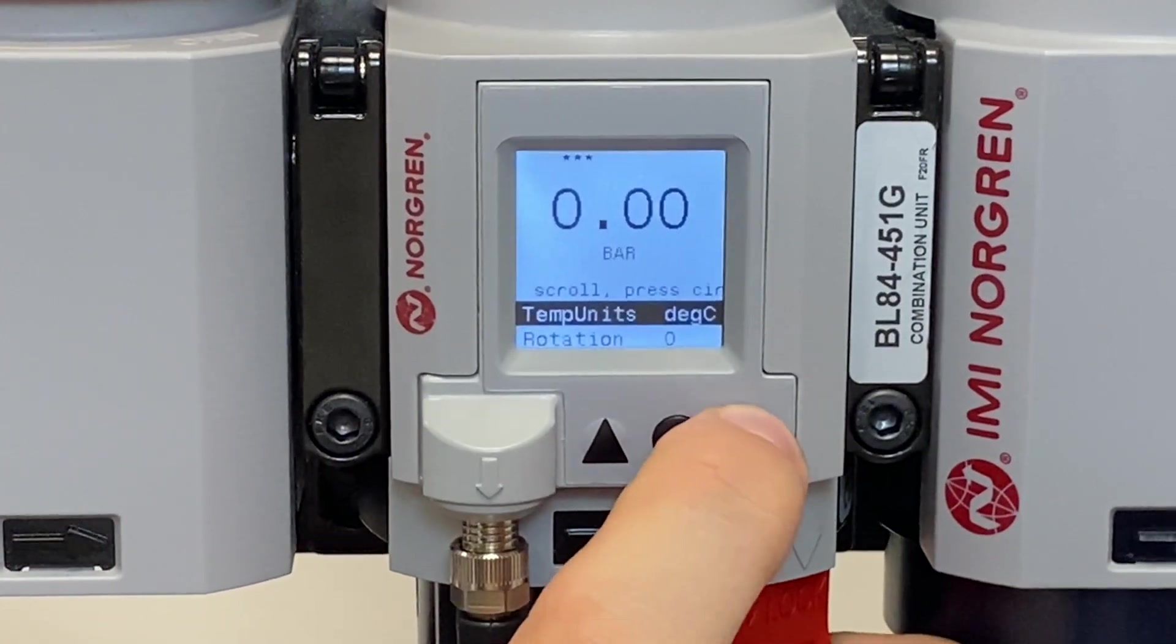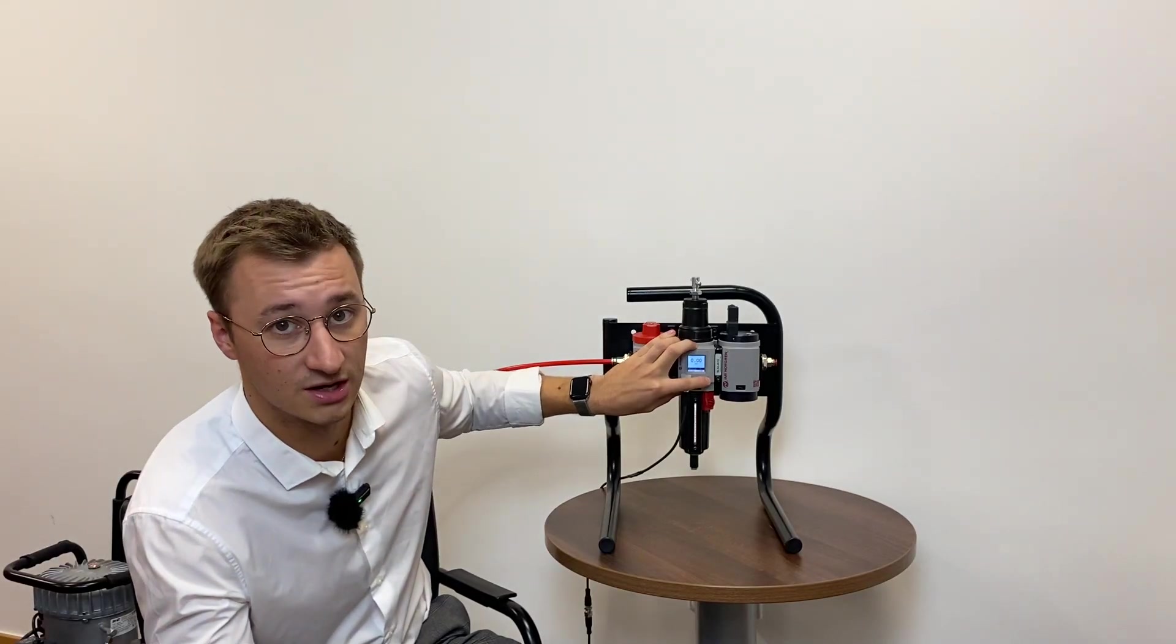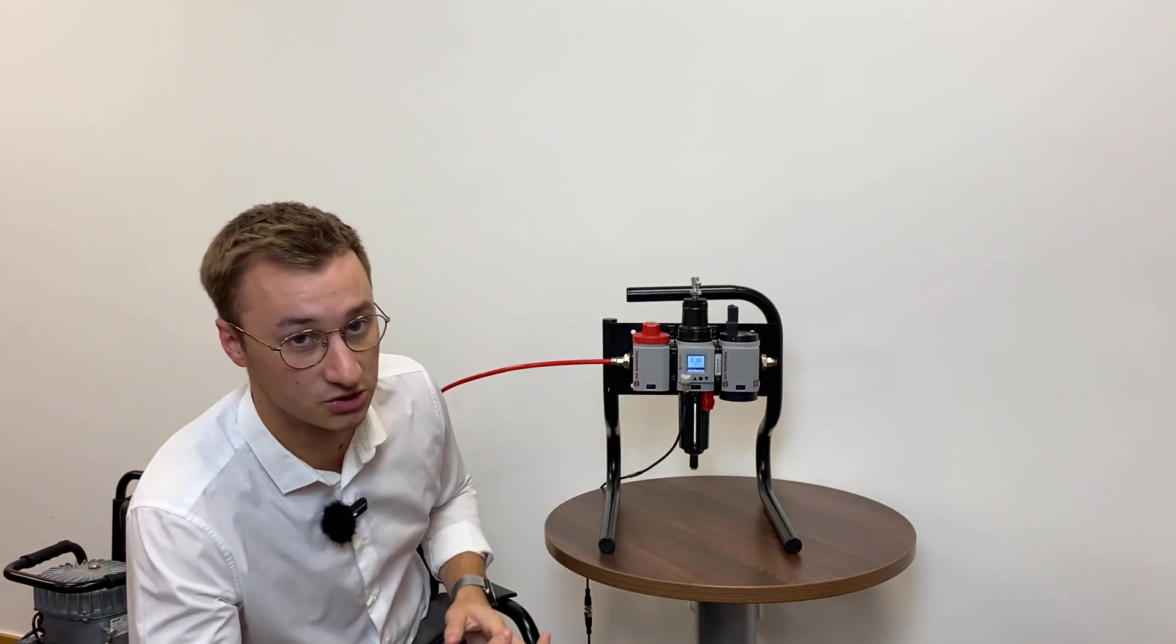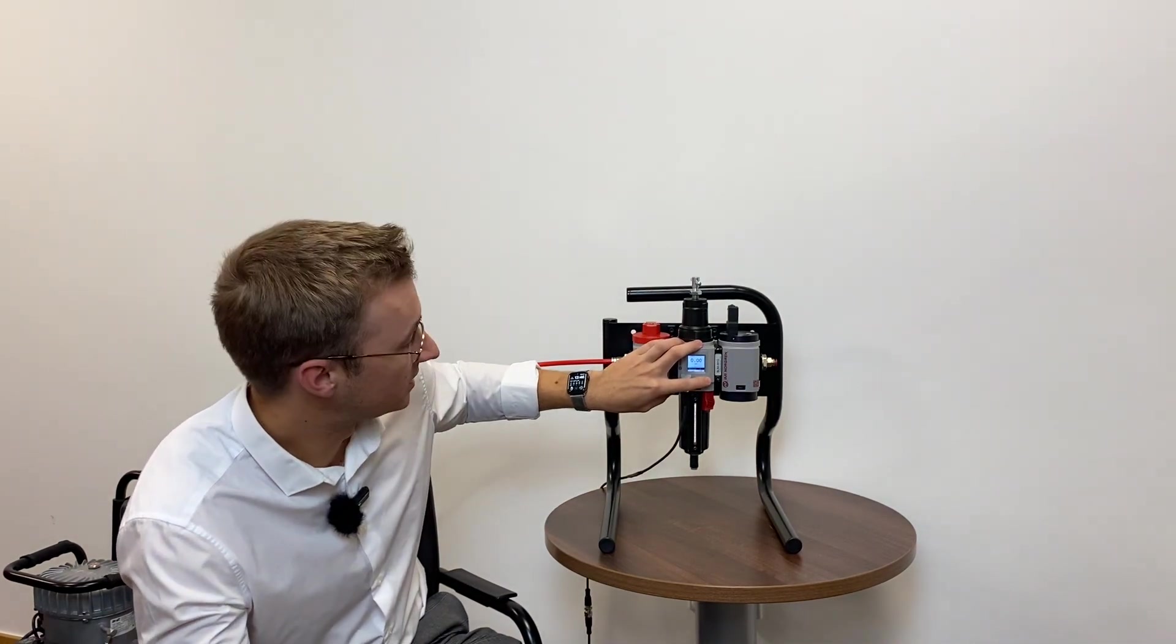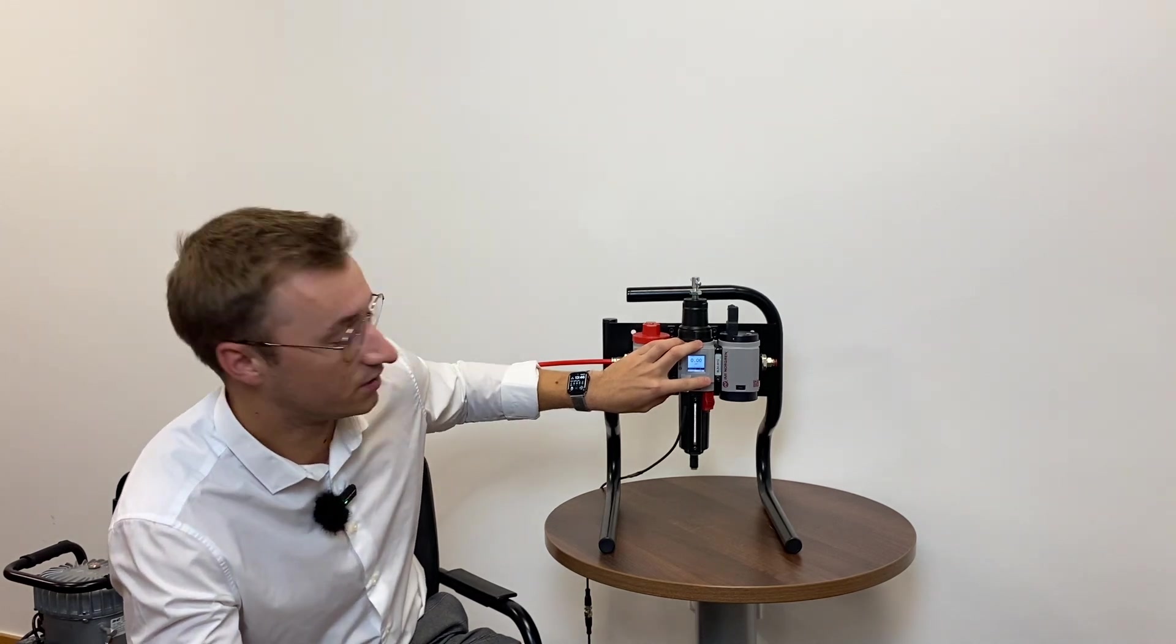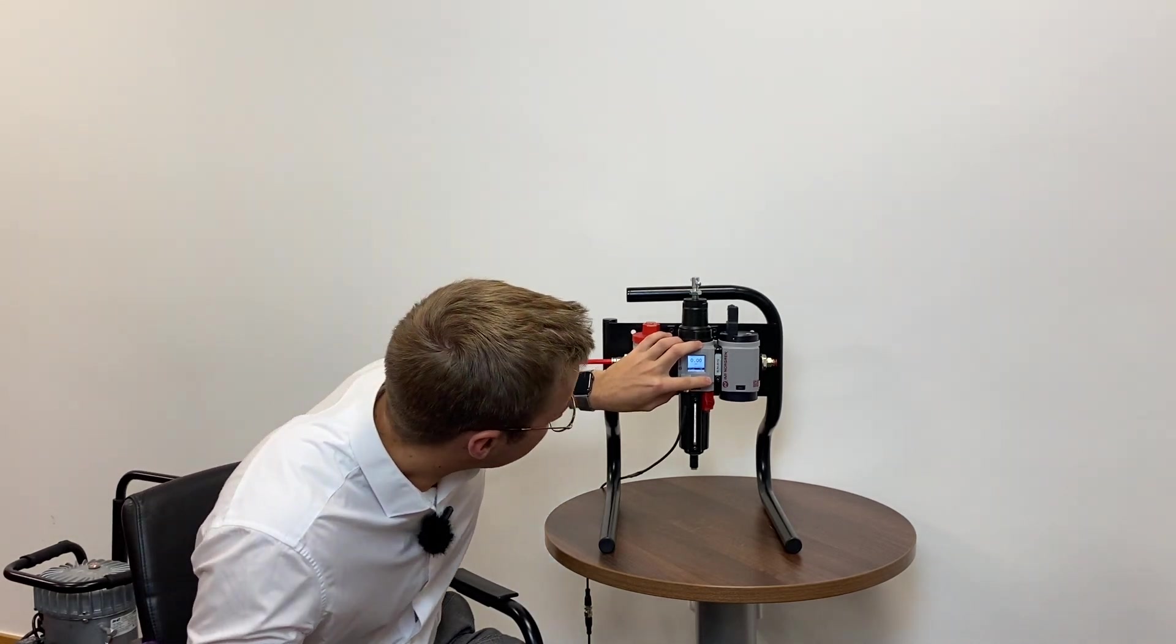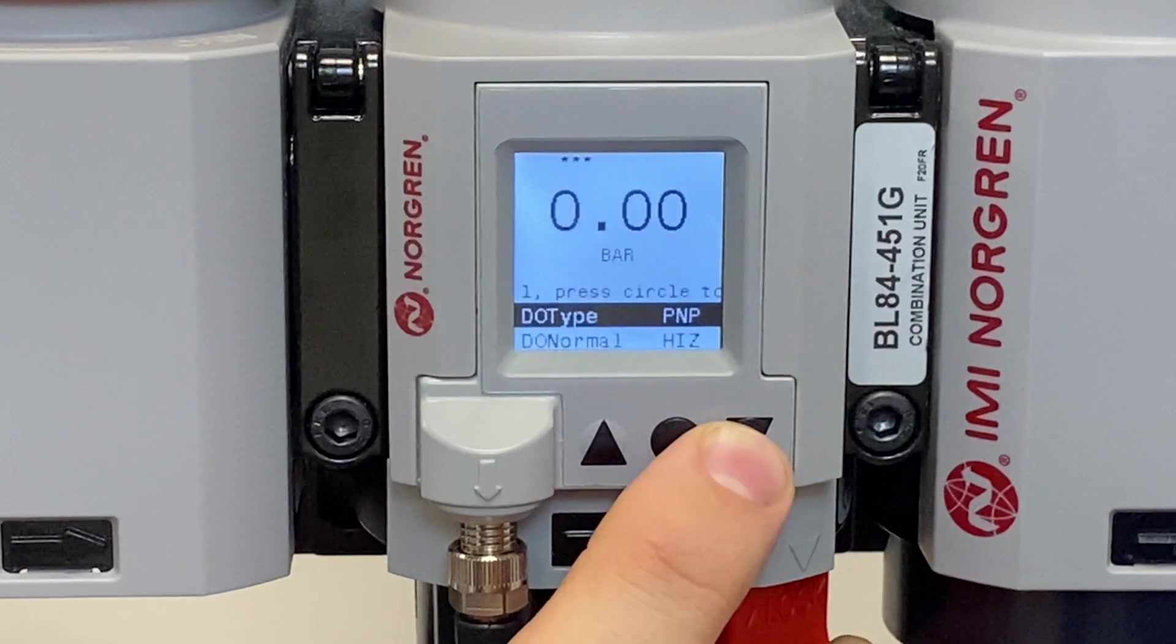In this example I can't show you that because we've got, as you can see, we've got a bowl on it. But if you wanted to invert your regulator, you would enter the rotation angle here, the digital output type, the digital output normal.